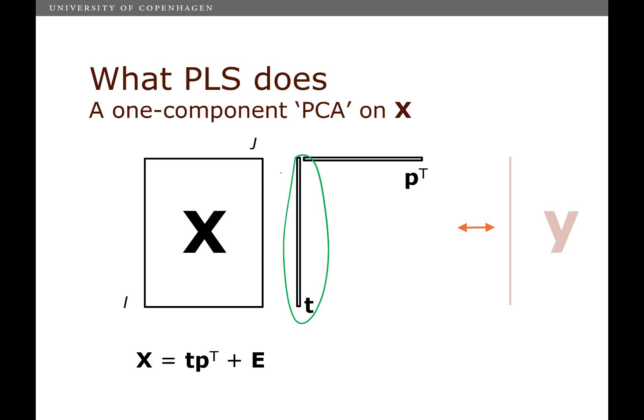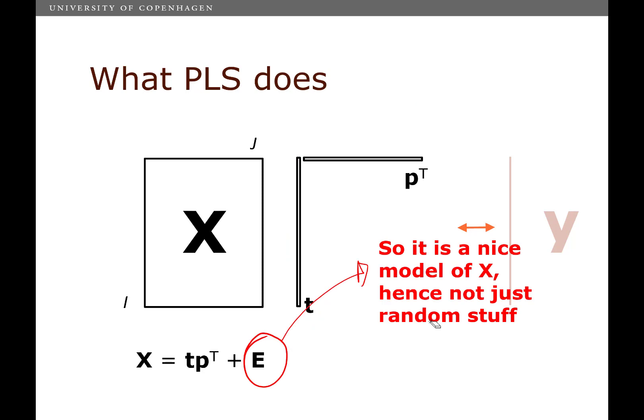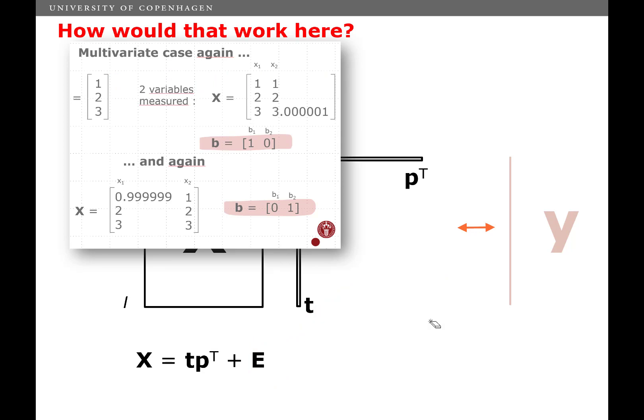Instead of using X, I can use my score vector for regression. So I can predict Y from T instead of predicting Y from X. And let's take a look at how that would work if we do it on the two data sets that we just saw in the previous video.